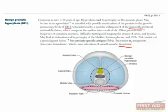BPH compression of the urethra can lead to increased urinary frequency, nocturia, difficulty starting and stopping the stream of urine, and painful urination. If the prostate significantly blocks the urethra, urinary retention can occur, distending the bladder and causing bladder hypertrophy. If urine backs up further, it can cause hydronephrosis and UTIs.